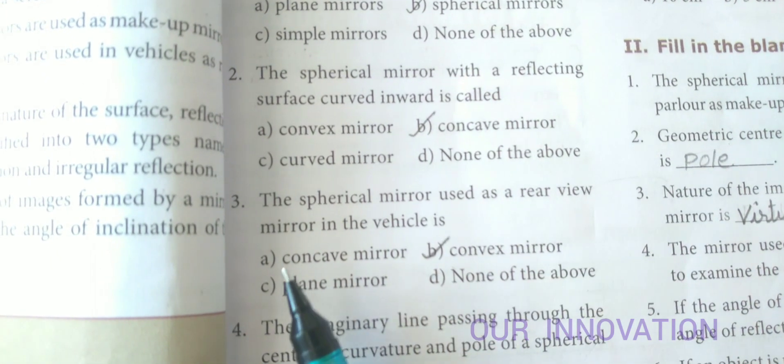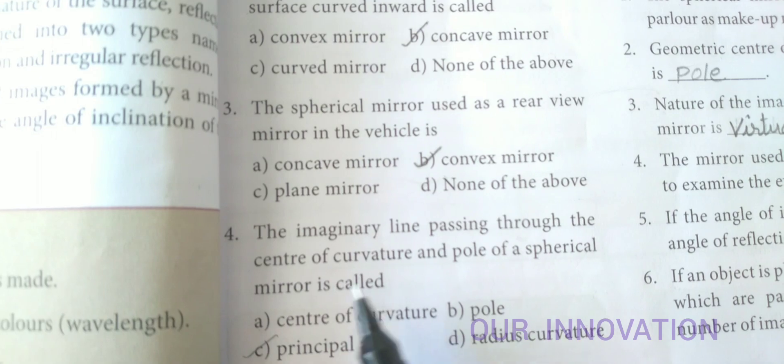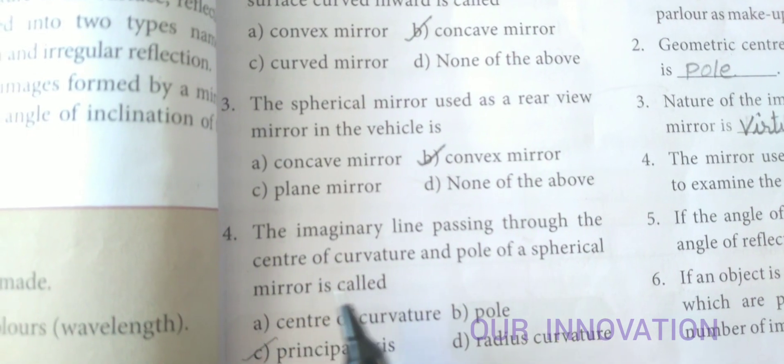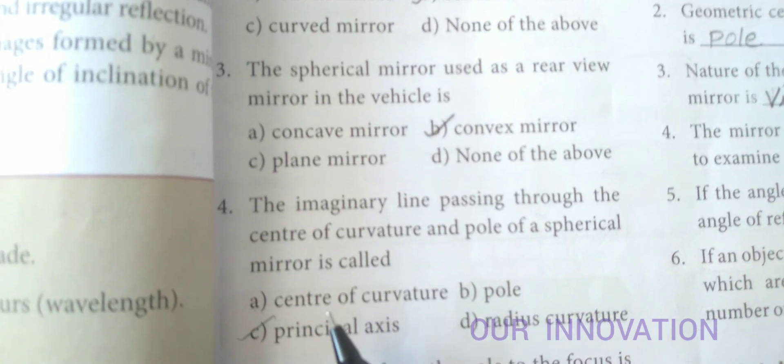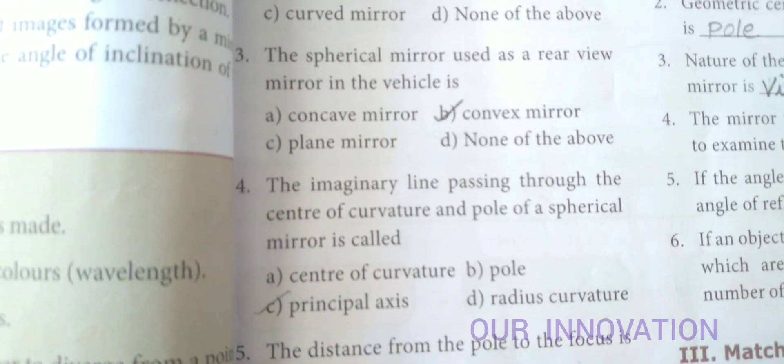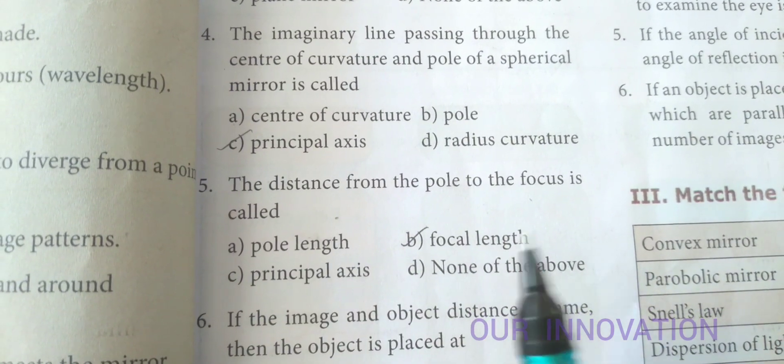The imaginary lines passing through the center of curvature and the pole of a spherical mirror is called principal axis. The distance from the pole to the focus is called focal length.